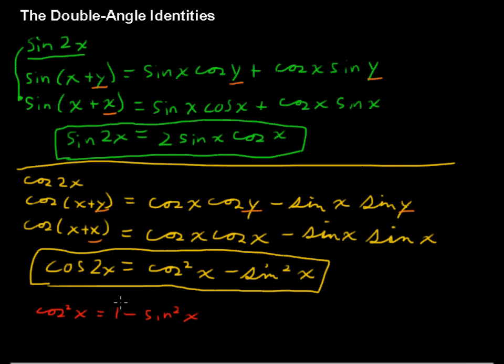cos squared of x equals 1 minus sin squared of x. And then you could plug all of this in for cos squared of x. And that would then give you cos of 2x equals 1 minus sin squared of x minus sin squared of x.